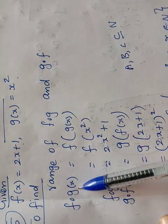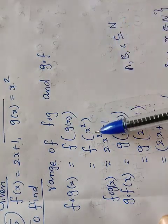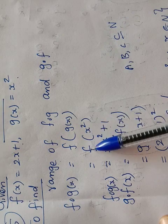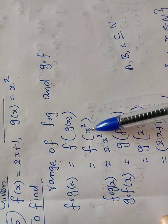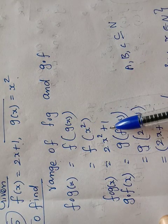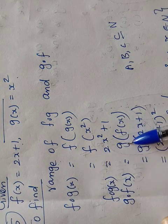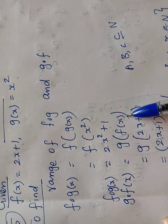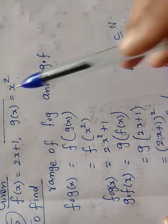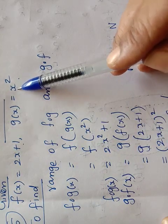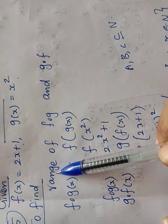f composite g means f of g of x. The g of x function is x squared, so you substitute x squared into the f function. In 2x plus 1, instead of x you substitute x squared, giving 2x squared plus 1. Next, for g composite f of x: f of x is 2x plus 1, so you substitute 2x plus 1 into the g function, which is x squared. So the result is (2x plus 1) whole squared.